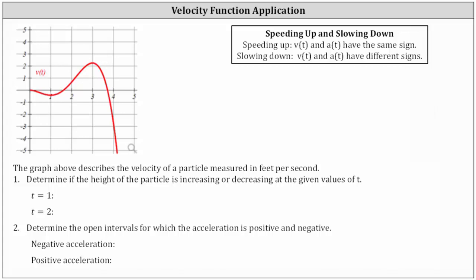The graph above describes the velocity of a particle measured in feet per second. Number one, we're asked to determine if the height of the particle is increasing or decreasing at a given value of t.